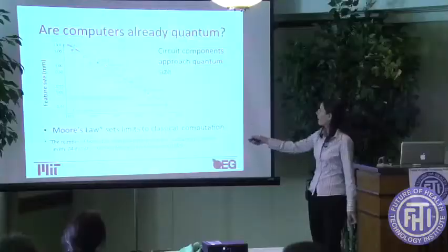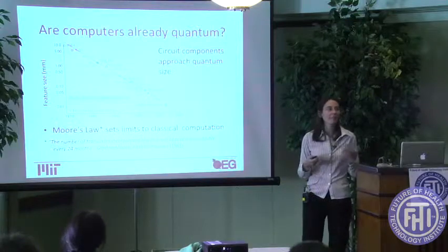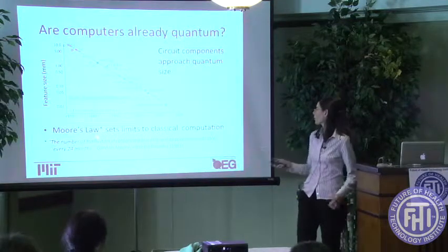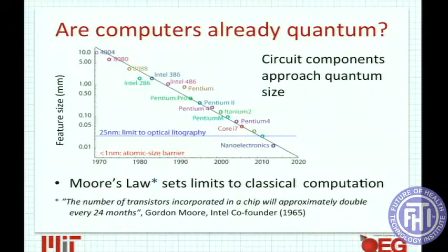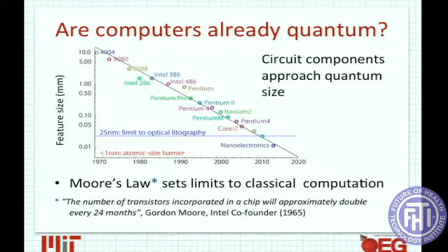This plot actually follows an empirical law that Gordon Moore proposed in 1965. He managed to predict that the size of computers would decrease by doubling the number of transistors in the chip every year. And it seems that this very empirical law — there is nothing which really predicts it — is actually quite well applied.